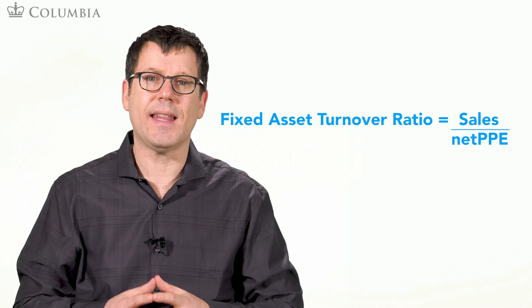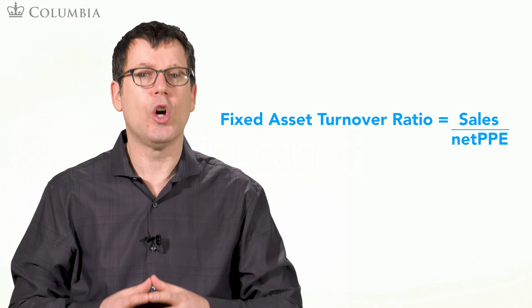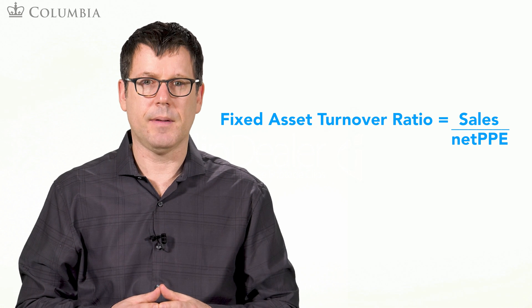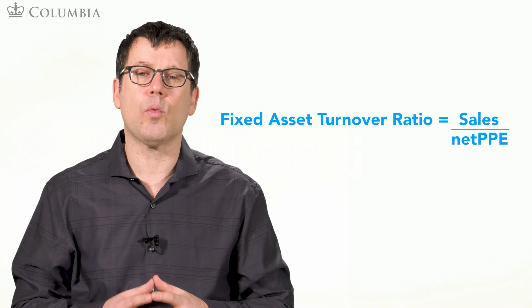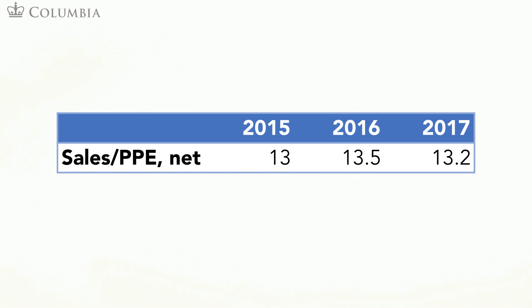This ratio is defined as sales over net PP&E. Let me first show you this ratio for MANOA and then I will explain how to think about it. The table below shows the fixed asset turnover ratio for MANOA for the years 2015, 2016, and 2017. As you can see, this ratio ranges from 13 to 13.5.